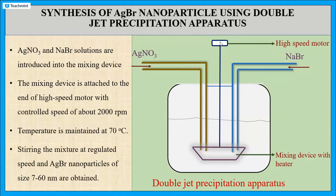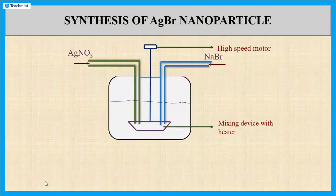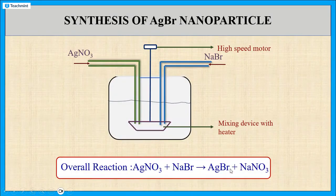Finally, by stirring the silver nitrate solution and the sodium bromide, we will get our required nanoparticles. The overall reaction taking place is silver nitrate with sodium bromide to produce silver bromide nanoparticles. By using this method, we will get the silver bromide nanoparticles.